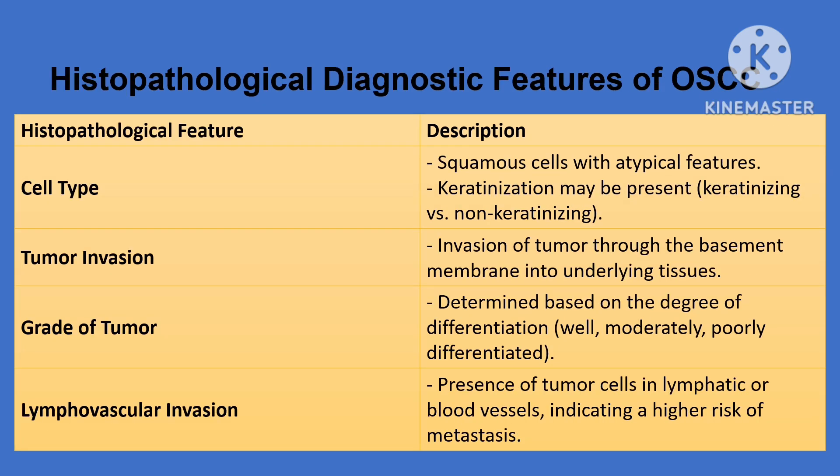To confirm oral squamous cell carcinoma with a biopsy, we examine cancer cells, which can be keratin-producing or not. It is important to check if the tumor has spread beyond the basement membrane into nearby tissue — indicating tissue invasion. The tumor is also graded as well, moderately, or poorly differentiated depending on how abnormal the cells are. Finally, we check for lymphovascular invasion, meaning the cancer has spread into blood vessels or lymph nodes, increasing the risk of further spread.